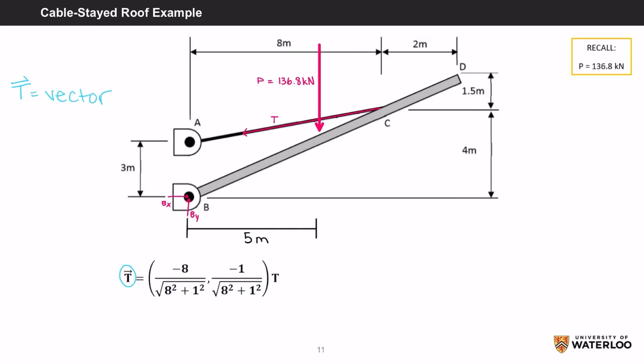We know the tension in the cable is headed from C to A because it makes sense that the cable is going downwards. We want the direction of the cable without the magnitude, so we would have to turn it into a unit vector.